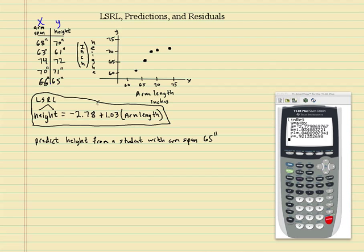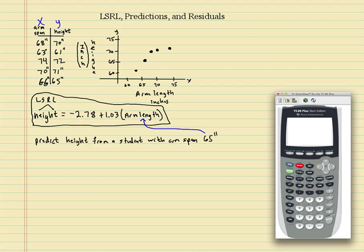So to predict this, this is my model. All I would have to do is insert 65 into my arm length, do this mathematical operation, and that'll give me the height. So let's go ahead and do it on the calculator. Let's quit out of that. So what I want to do is, like I showed you in the last video, VARS, Y VARS, enter for function, enter for Y1, open parentheses, put 65 in here, and enter.